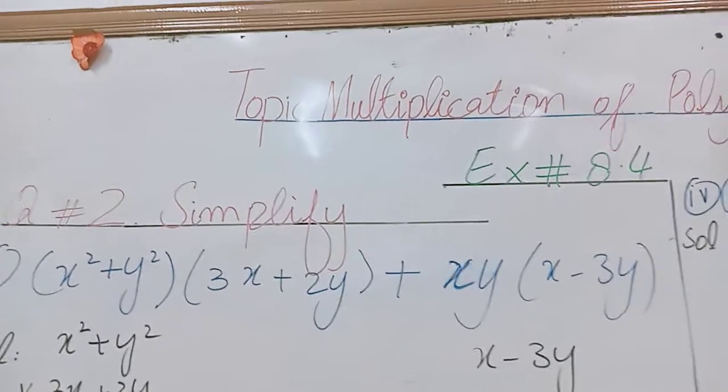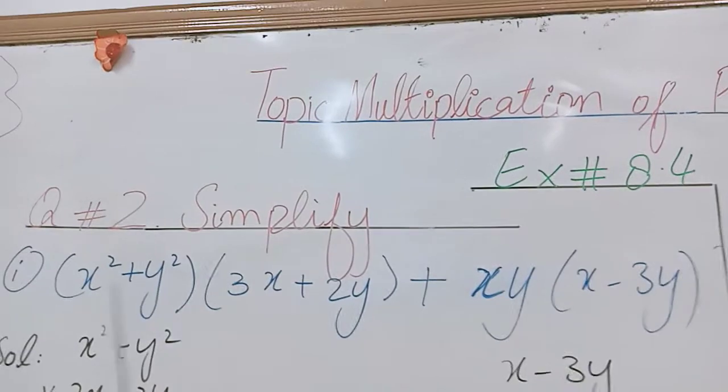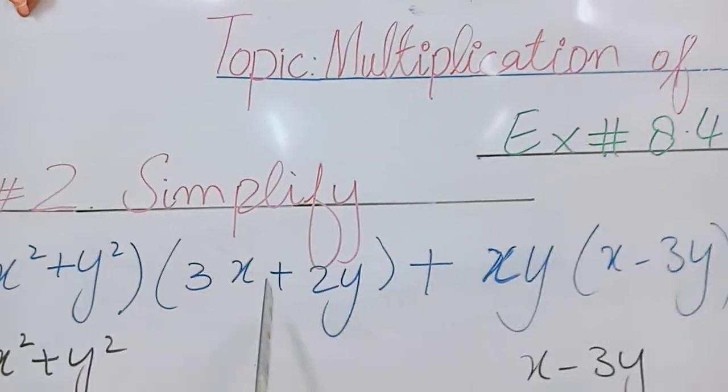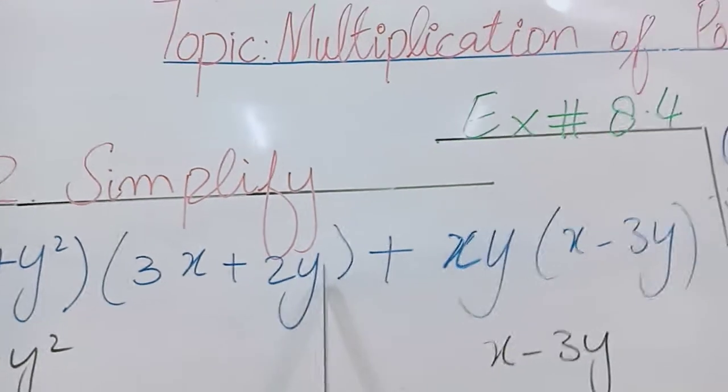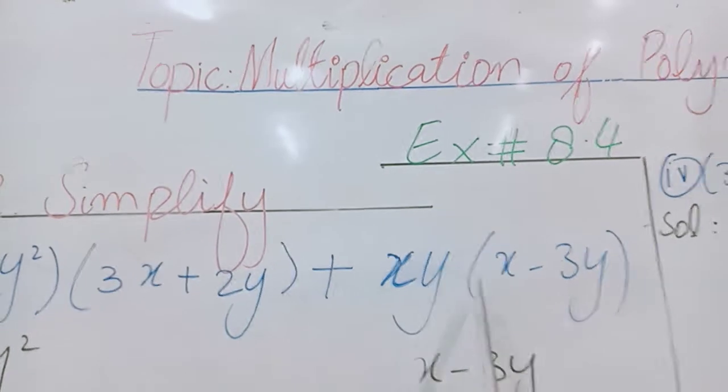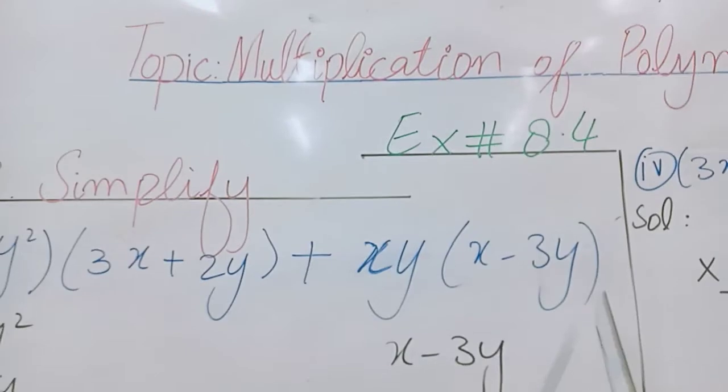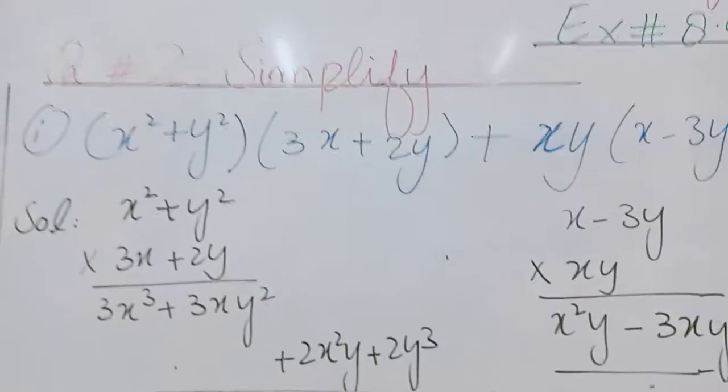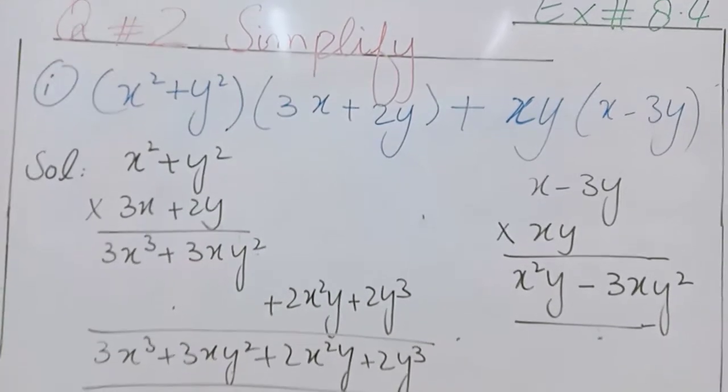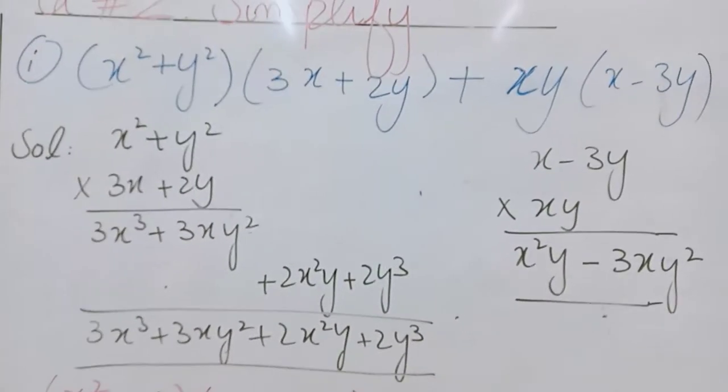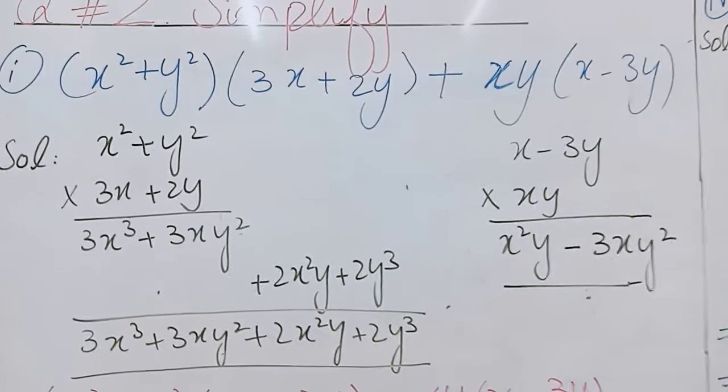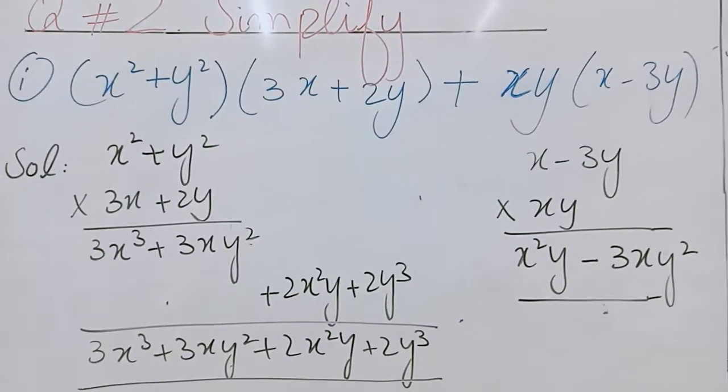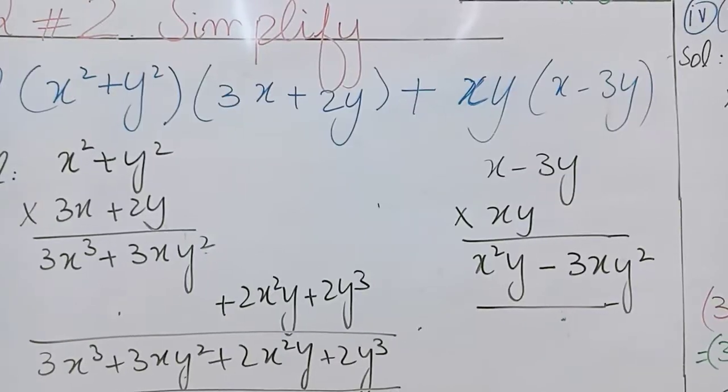This is first part of question number 2: (x² + y²)(3x + 2y) + xy(x - 3y). Students, you have learned how to multiply the polynomials in previous lectures. Polynomial, binomial, binomial and trinomial.